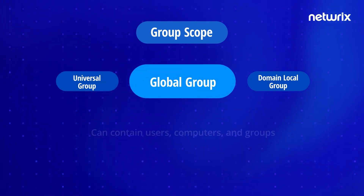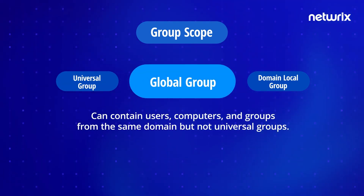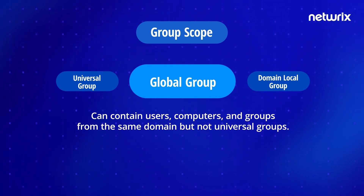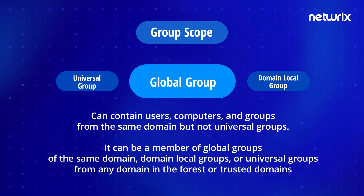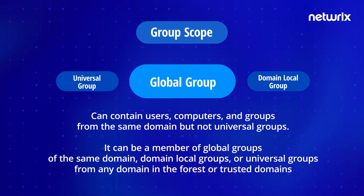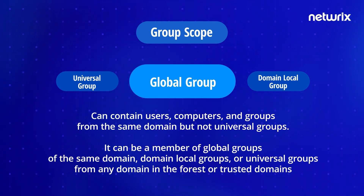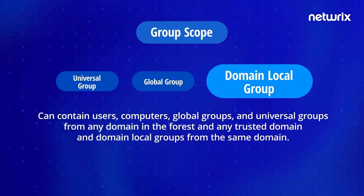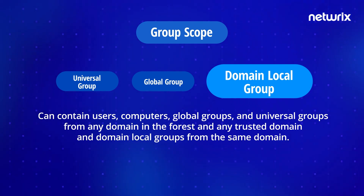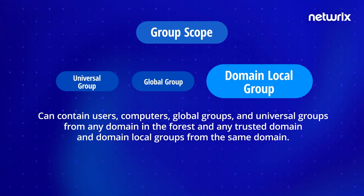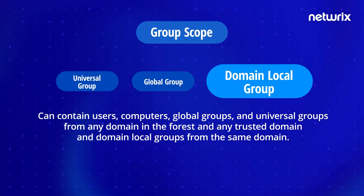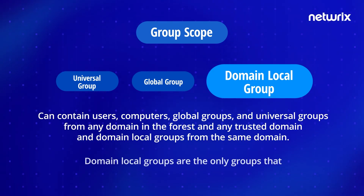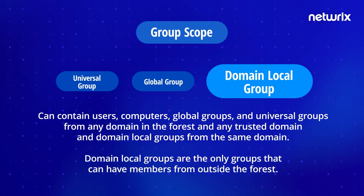A global group can contain users, computers, and groups from the same domain but not universal groups. It can be a member of global groups of the same domain, domain local groups, or universal groups from any domain in the forest or trusted domains. A domain local group can contain users, computers, global groups, and universal groups from any domain in the forest and any trusted domain, as well as domain local groups from the same domain. Domain local groups are the only groups that can have members from outside the forest.